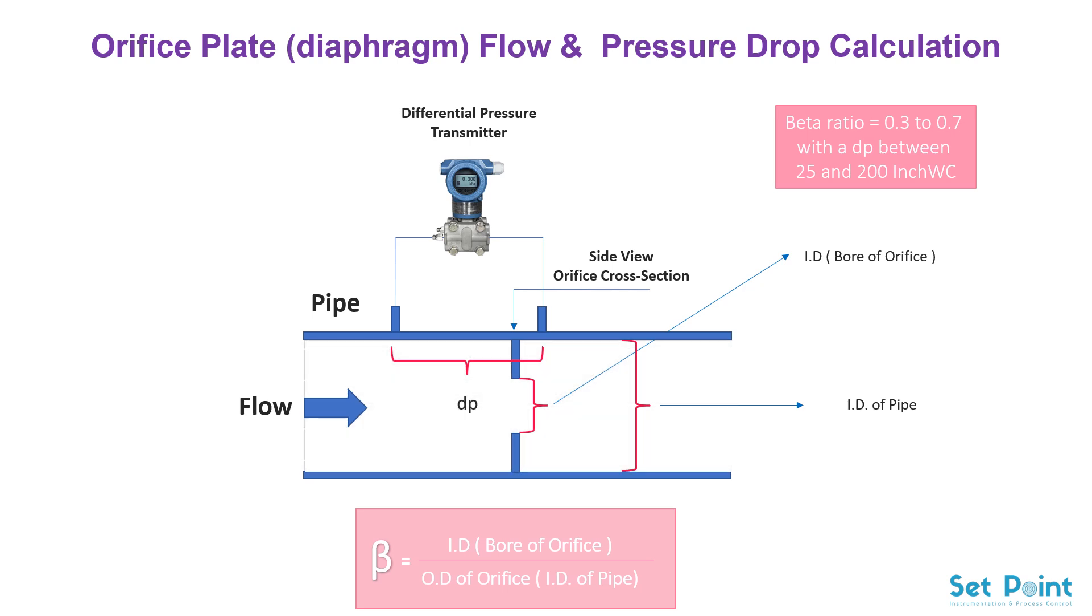An orifice pressure drop refers to the reduction in fluid pressure that occurs when the fluid flows through an orifice or a constriction in the pipe. This phenomenon is commonly used in engineering applications to measure the flow rate of the fluid.